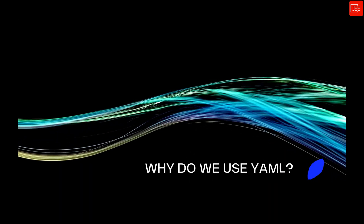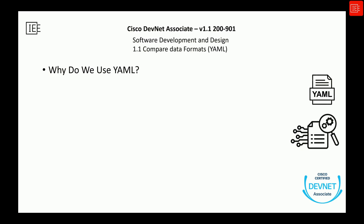Now that we have seen what YAML is and what it looks like, let's dive deeper into a really important question: why do we actually use YAML, especially in networking, automation, and DevOps? The main reason YAML became so popular is because humans needed a way to describe information that's both easy to read and easy for machines to understand, without feeling like we are writing complicated programming code.